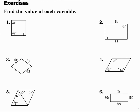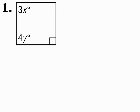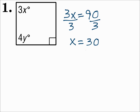Find the value of each variable. Even though it doesn't say, all of these are parallelograms, so we'll use the properties of parallelograms. For number one, since this parallelogram has a right angle, then it has four right angles — that's one of the properties. So each angle is a right angle, which means 3x has to equal 90. Divide both sides by 3 and x is 30.